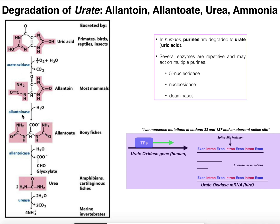Some organisms have a second enzyme, allantoinase. Allantoinase is a hydrolytic enzyme that breaks the bond between a carbon and a nitrogen in allantoin, and the product is allantoate. Allantoate is the purine degradation product excreted by most bony fishes — the osteichthyes, such as cod or salmon. These organisms would also not express allantoatase or urease; they stop at allantoate and excrete that.